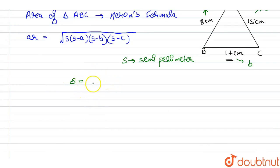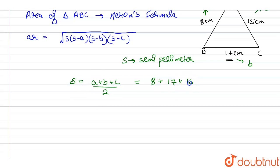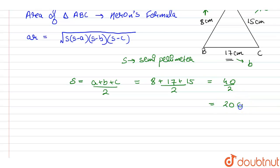So S equals A plus B plus C divided by 2, which gives us 8 plus 17 plus 15 divided by 2, equal to 40 divided by 2, which is equal to 20. The units will be in centimeters, so S is 20 centimeters.